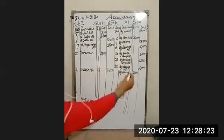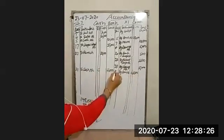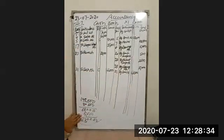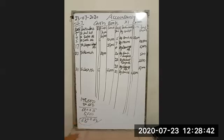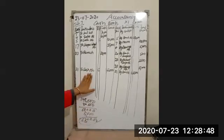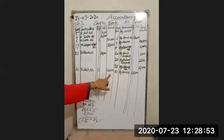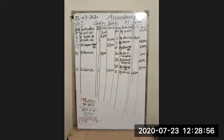For the contra entry, mention 'C' in the ledger folio column. The date is January 31st. In the cash book, show 'by bank account' on the cash payment side — 63,000 — and 'to cash account' on the bank receipt side — 63,000. The bank will increase and cash will decrease. The rest of the balance is carried forward properly. Now do the totals on both sides.